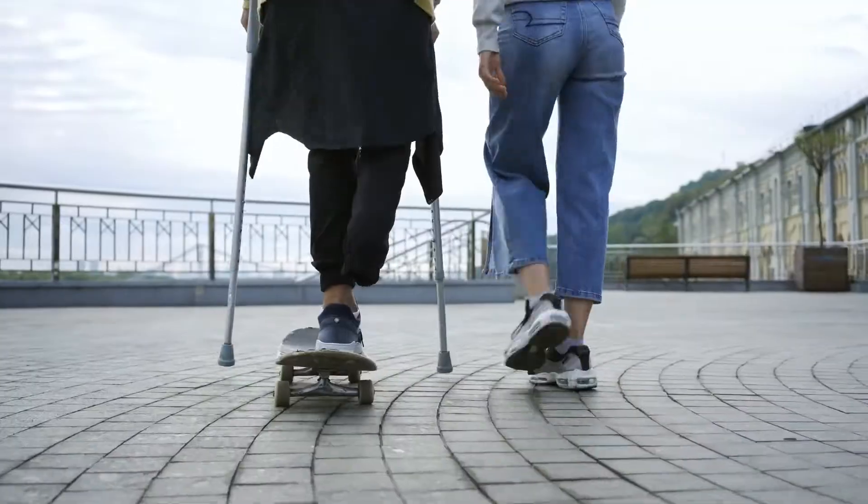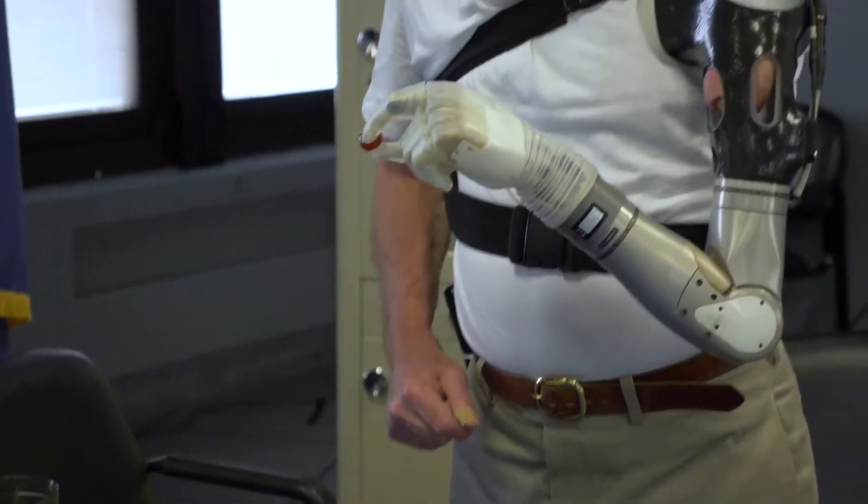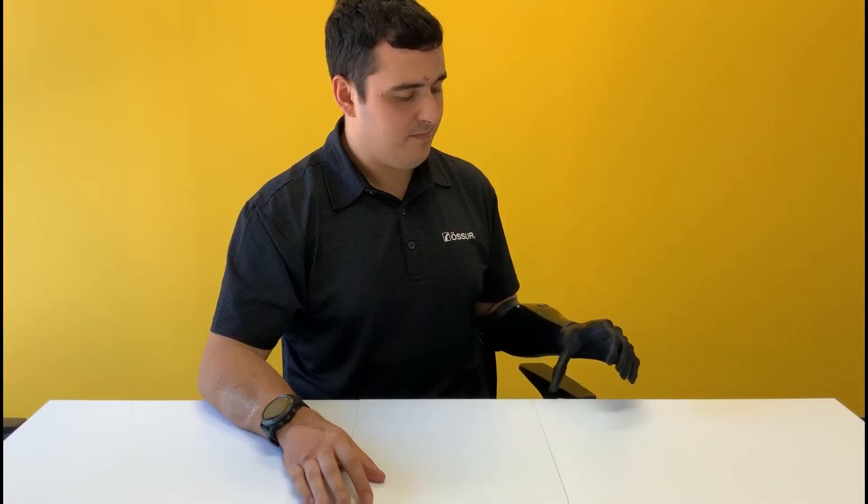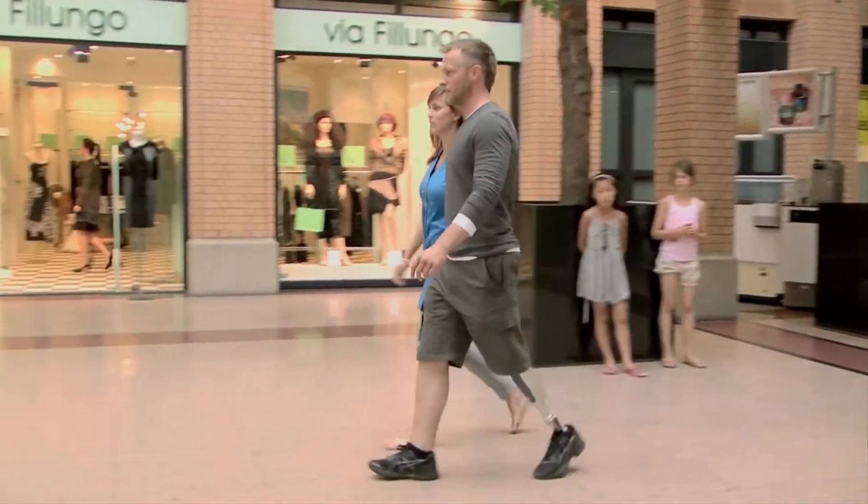Losing a limb is nothing short of devastating, but modern technology has made it possible to continue leading a normal life. The most common way to address the loss is a prosthetic arm or leg, which does a pretty good job of returning some flexibility and dexterity to the person wearing it.